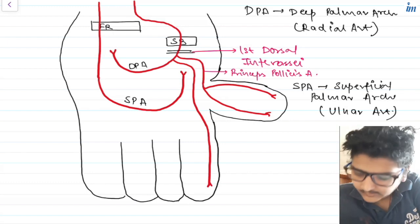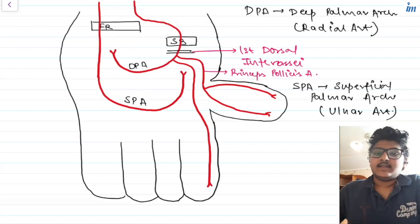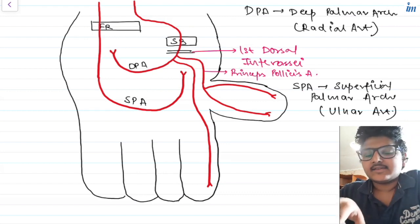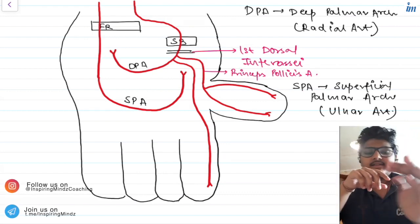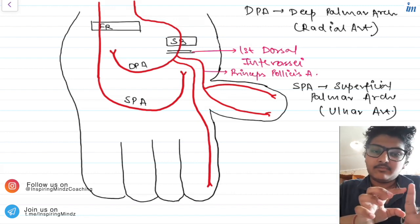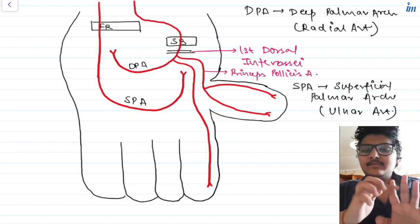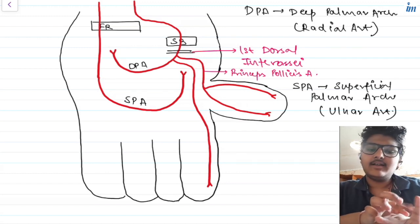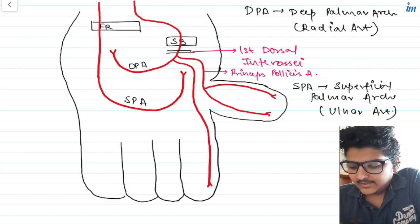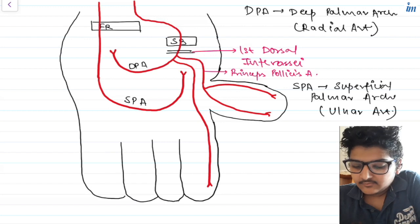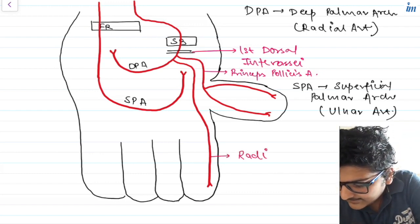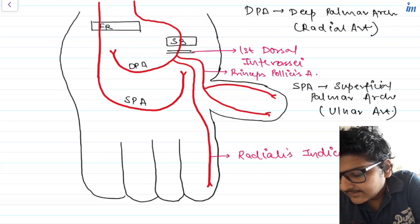The deep palmar arch or radial artery also gives off a branch to supply the radial side of your index finger. Remember that radius is your lateral bone and ulna is the medial bone, so we call them the radial side or ulnar side. So the deep palmar arch gives an artery to supply the radial side of your index finger, and therefore this artery is known as the radialis indicis artery.